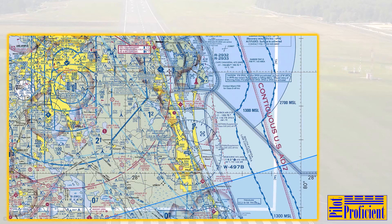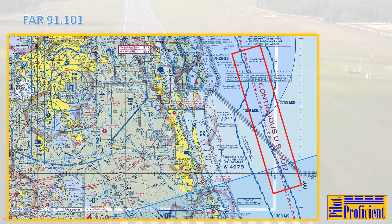So the flight rules we talk about in subpart B will apply to the U.S. as well as 12 miles out over the coast in what is known as the ADIZ, or Air Defense Identification Zone.